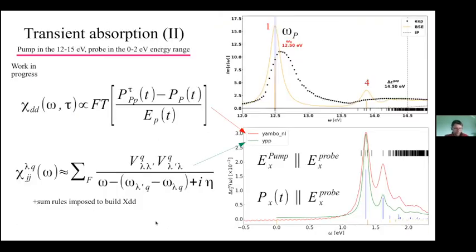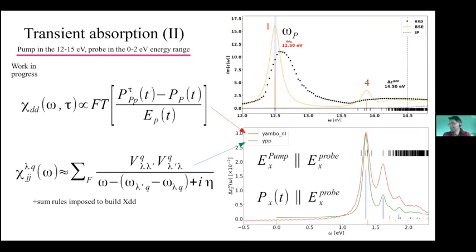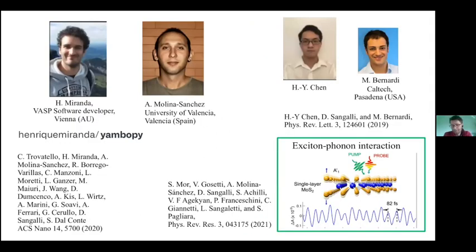I ask Arjan if there is still time — about five minutes more. In this last part, I want to jump from exciton-light to exciton-phonon interaction. I will very quickly discuss an initial analytical formulation of exciton-phonon coupling done in collaboration with Marco Bernardi, where most of the work was done by Chen, a student in Marco's group. Then I will also show results on how one can define exciton-phonon coupling by finite differences, in collaboration with experimental groups.